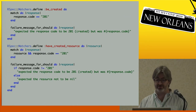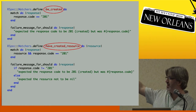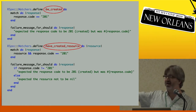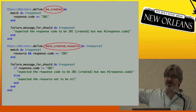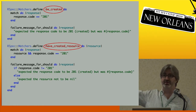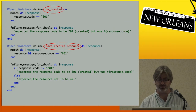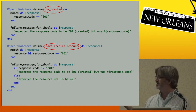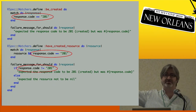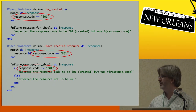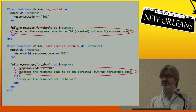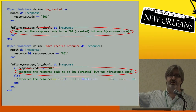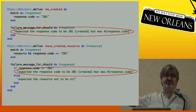We've got two matchers. In both we say RSpec matchers define, then 'be created' and 'have created resource' are method names — this code actually creates two different objects. You can see there's some duplication: three appearances of comparing response code with the string '201'. He wanted to get rid of that duplication. There are also these failure message strings that are very similar — in fact identical — because the second matcher could fail for the same reason as the first.